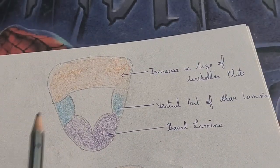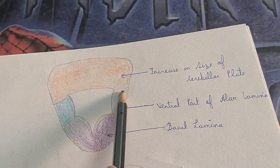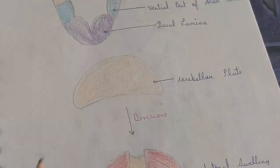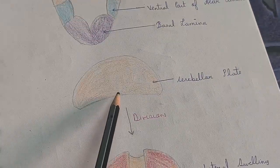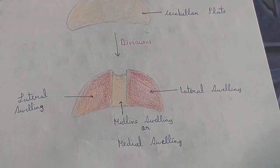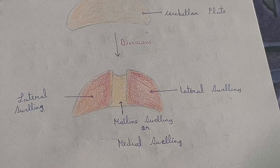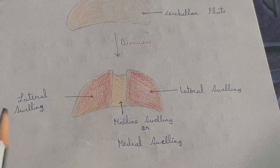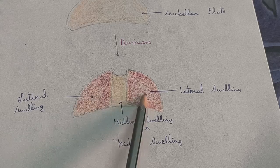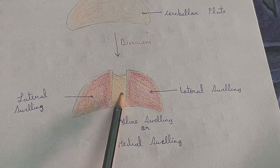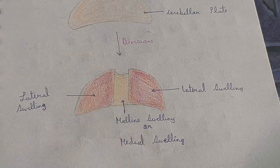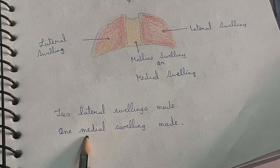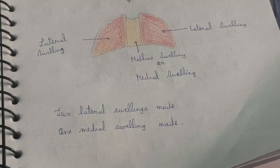You can see that this cerebellar plate is increasing in size. In the cerebellar plate, three swellings are made in total — two lateral swellings and one midline swelling.